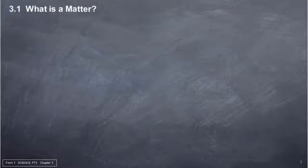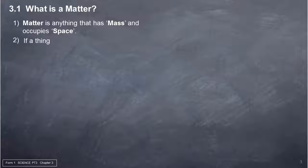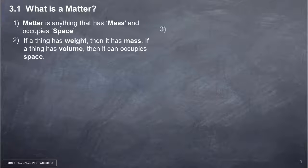3.1 What is matter? 1. Matter is anything that has mass and occupies space. 2. If a thing has weight, then it has mass. If a thing has volume, then it can occupy space.